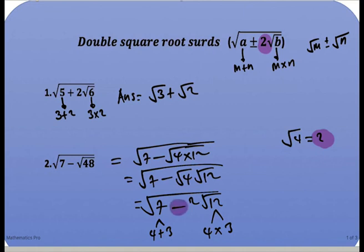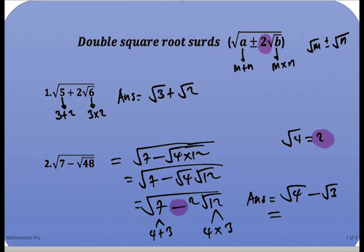The two numbers are 4 and 3, but we have a minus sign here, so make sure you write the square root of the bigger number first. Our answer will be equal to the square root of 4 minus the square root of 3. The square root of 4 is also equal to 2, so our final solution is 2 minus the square root of 3. Thanks for watching.